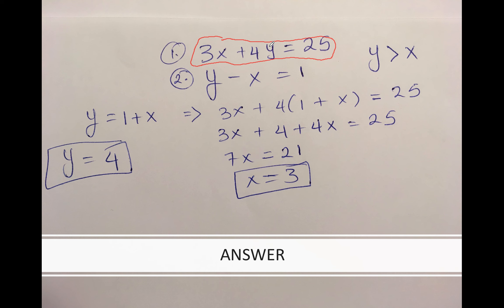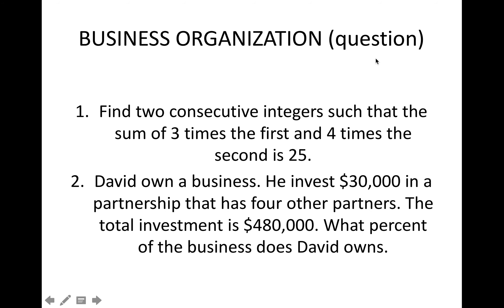So three times the first and four times the second. It's up to you if you want x to be the first or y to be the first. I chose y to be the second and x to be the first. If y is the second consecutive number, that means y is greater than x.